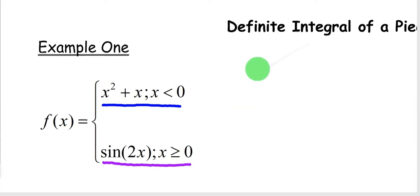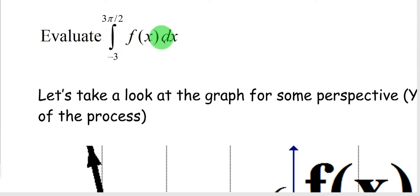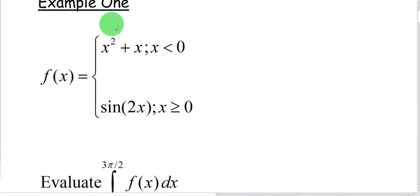How do we find the definite integral, or the signed area, of this function? We're going to evaluate the definite integral of f(x) from negative 3 to 3π/2.